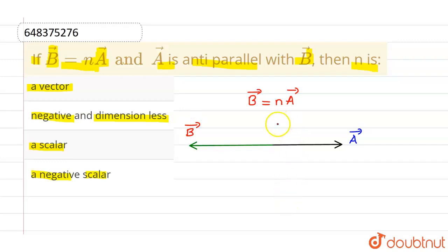Now, if this particular n is positive, then there is no change in direction. That means, the direction of B vector and direction of A vector will be same. A vector will be parallel to B vector.